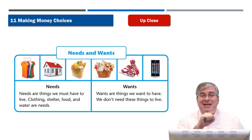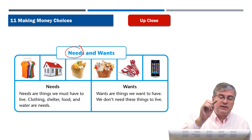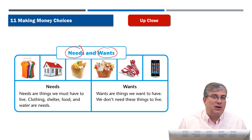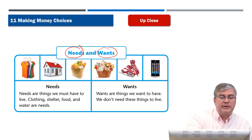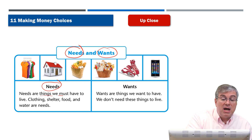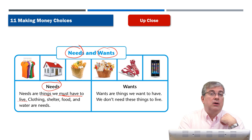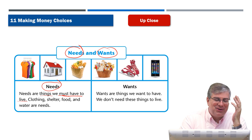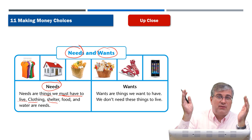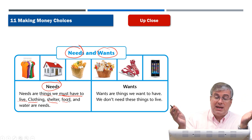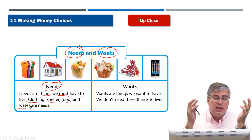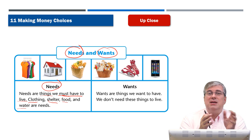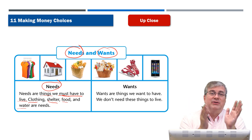Our next main idea is about needs and wants in more detail. Needs are things you need to live. Wants are things that would be nice to have — things that satisfy a desire. What are some examples of needs? Needs are things we must have to live: you need clothes, shelter for protection from the weather and the elements, food to eat, and water to drink and take a shower. Those are needs — things you need to live in society. You can't decide to go without them. You absolutely need them.